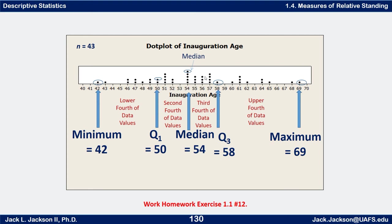Likewise, the 11th from the top of the upper half should be Q3. Counting 11 from the top gives us Q3 = 58, with 10 values above it and 10 below it in the upper half. Notice we did not count the median as being part of either half. So Q1 = 50 and Q3 = 58.